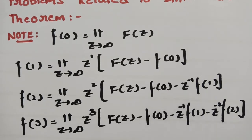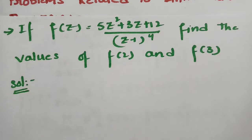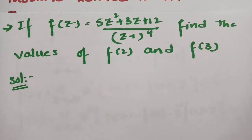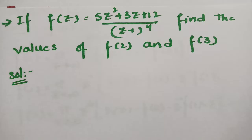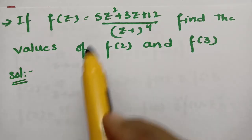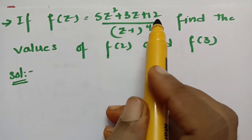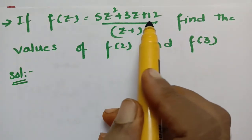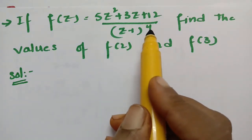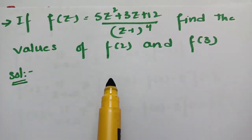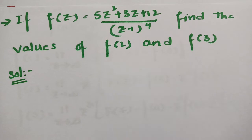Using these formulae we are going to solve the most important problem related to the initial value theorem. Given F(z) = (5z² + 3z + 12) / (z − 1)⁴, we have to find the values of f(2) and f(3).